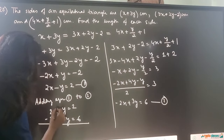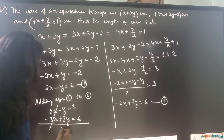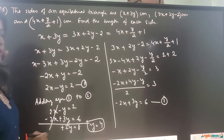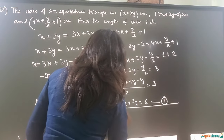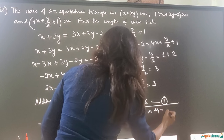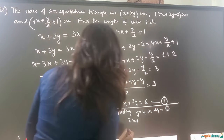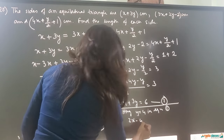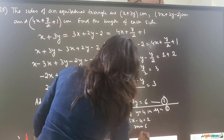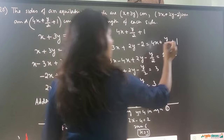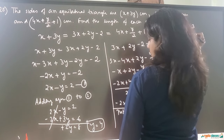Adding equation 1 (2x minus y equals 2) and equation 2 (minus 2x plus 3y equals 6): the x terms cancel, leaving 2y equals 8, so y equals 4. Putting y equals 4 into equation 1: 2x minus 4 equals 2, so 2x equals 6, giving x equals 3.